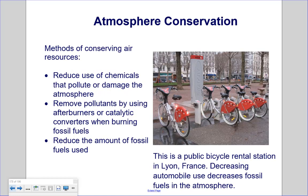Methods of conserving air resources include reducing use of chemicals that pollute or damage the atmosphere, removing pollutants by using afterburners or catalytic converters when burning fossil fuels, and reducing the amount of fossil fuels used. This is a public bicycle rental station in Lyon, France — decreasing automobile use decreases fossil fuels in the atmosphere.